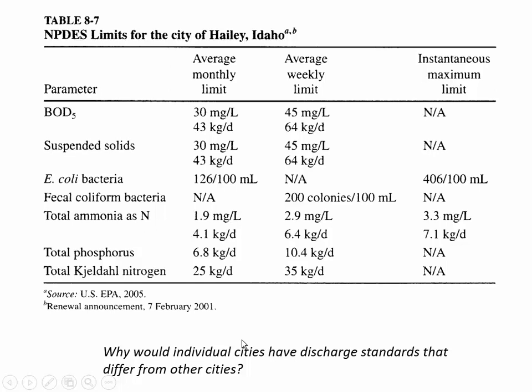From city to city they have different requirements, and at first that might seem unfair — why would Haley, Idaho have one requirement and Cleveland, Ohio a different set? The standards are specific because you have to look at where the wastewater is going and what are the characteristics of the receiving stream. It could be that one city is discharging to a very sensitive habitat and another city is discharging to a habitat that can handle more waste. So they're looking both at what is being discharged and where it's going.